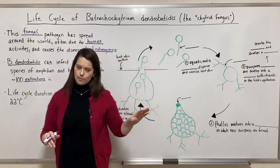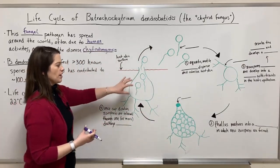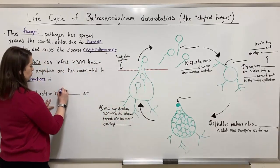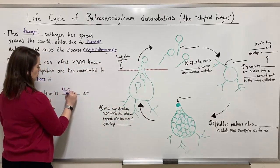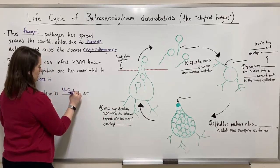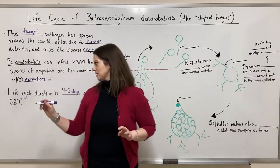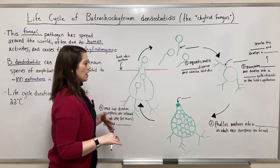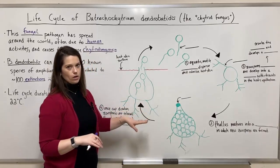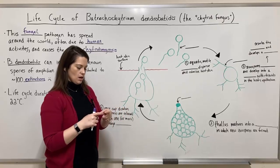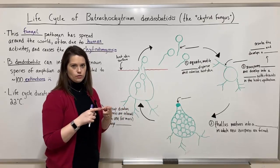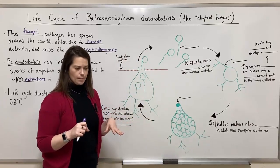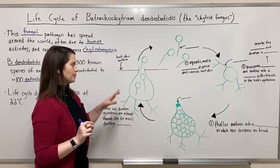Let's jump into the major purpose of this video: the life cycle of this pathogen. The life cycle duration is about four to five days at 22 degrees Celsius. Because it was the subject of my graduate work, I grew this in culture all the time — little culture flasks full of growth media and fungus. When we were done with it, we had to bleach it.